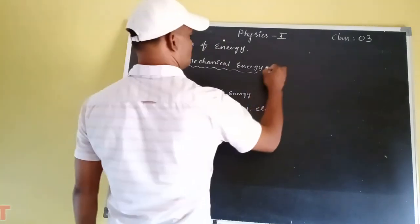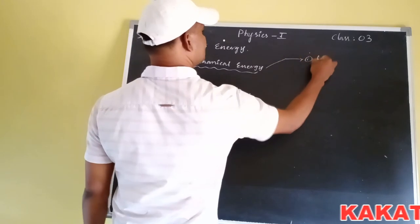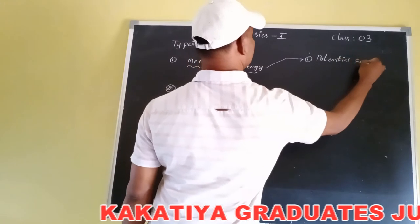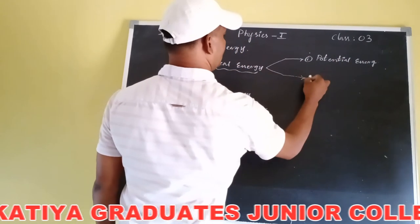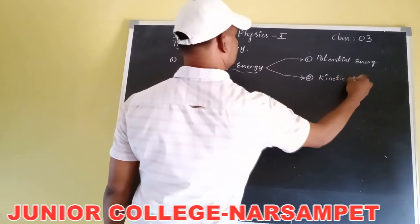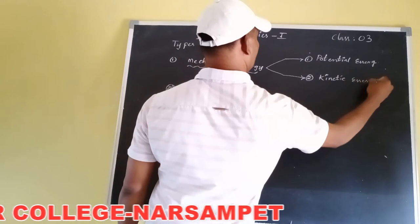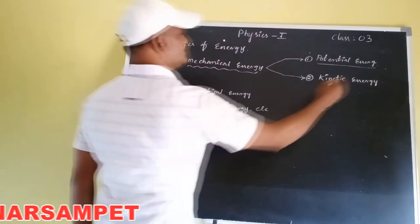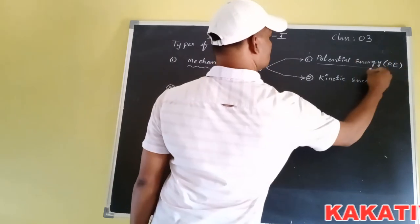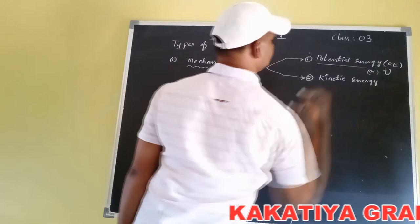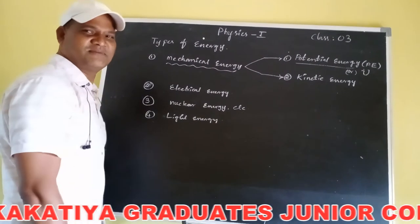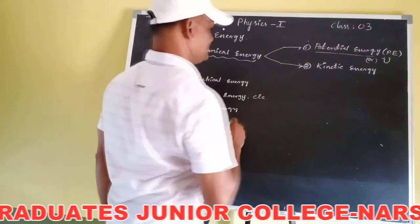The two types of mechanical energy are: first, potential energy, and second, kinetic energy. Potential energy is denoted by U.